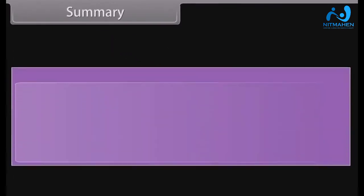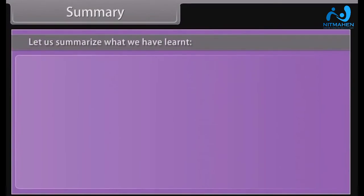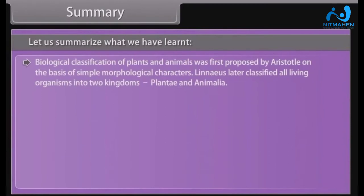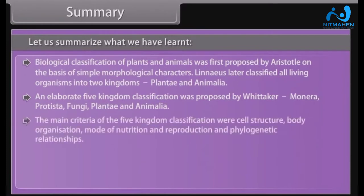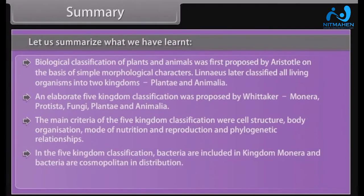Summary: Biological classification of plants and animals was first proposed by Aristotle on the basis of simple morphological characters. Linnaeus later classified all living organisms into two kingdoms — Plantae and Animalia. An elaborate five-kingdom classification was proposed by Whittaker: Monera, Protista, Fungi, Plantae, and Animalia. The main criteria were cell structure, body organization, mode of nutrition and reproduction, and phylogenetic relationships. In the five-kingdom classification, bacteria are included in kingdom Monera, and bacteria are cosmopolitan in distribution. These organisms show the most extensive metabolic diversity.